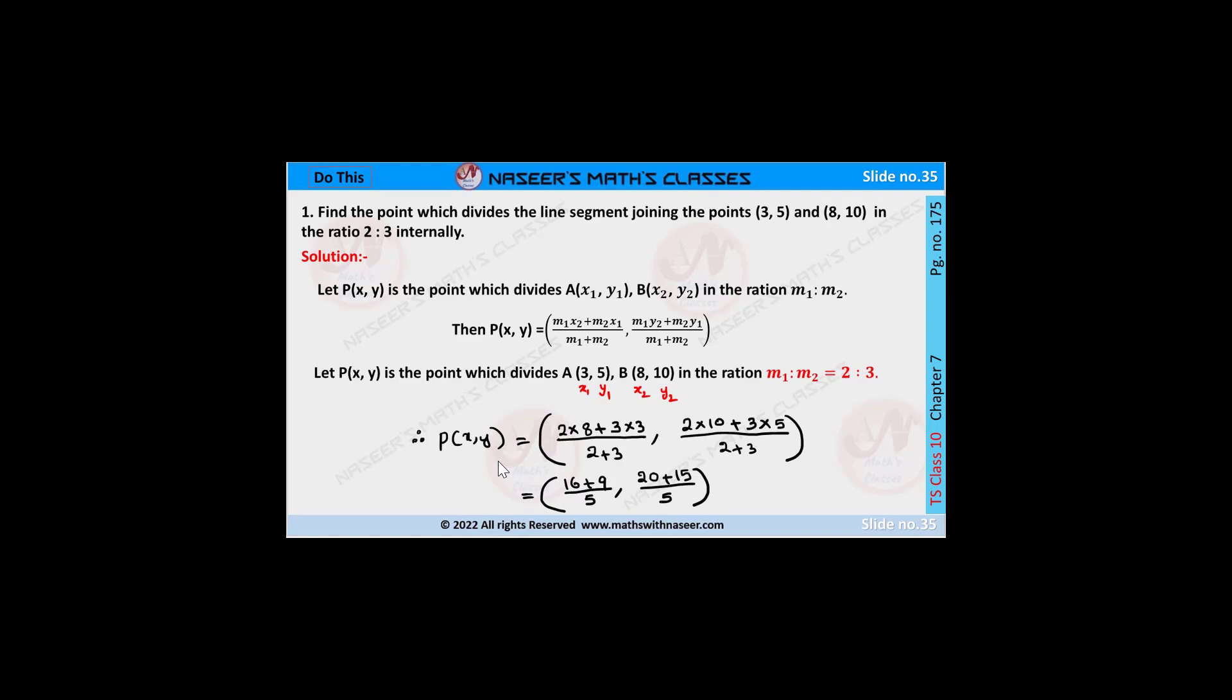then P(x,y) is written as: (2×8 + 3×3)/(2+3), (2×10 + 3×5)/(2+3). We get this by substituting the x1, y1, x2, y2, and m1 to m2 values.